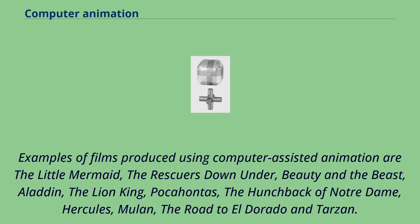Examples of films produced using computer-assisted animation are The Little Mermaid, The Rescuers Down Under, Beauty and the Beast, Aladdin, The Lion King, Pocahontas, The Hunchback of Notre Dame, Hercules, Mulan, The Road to El Dorado, and Tarzan.